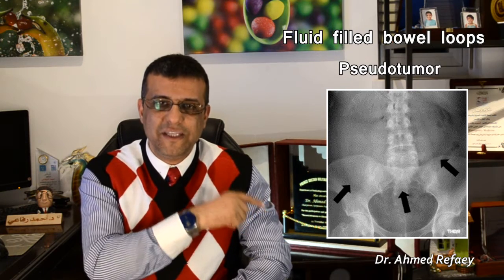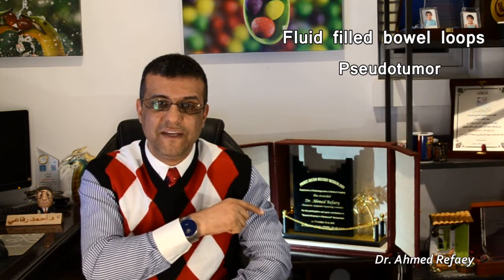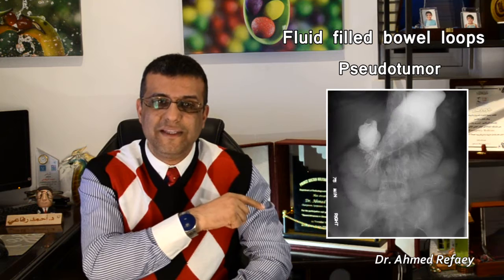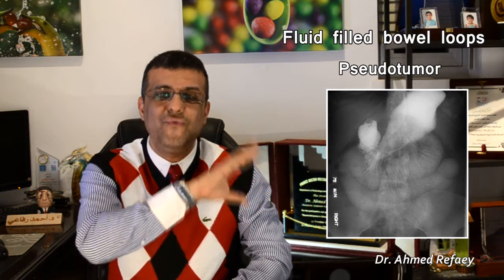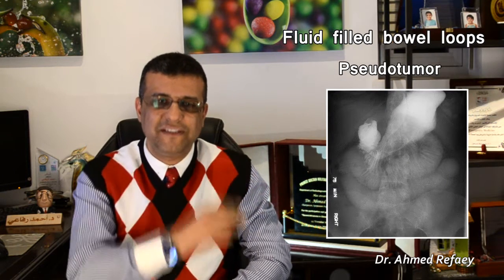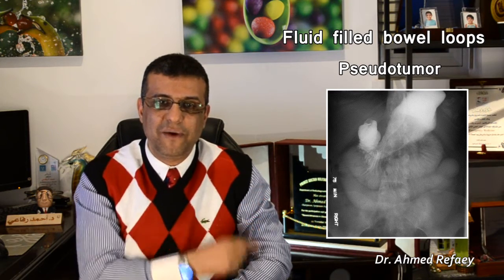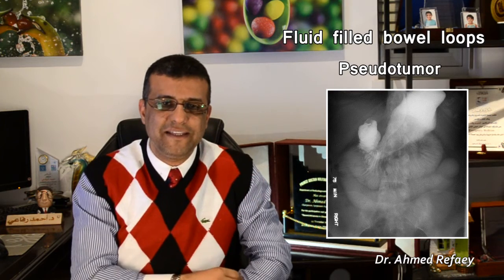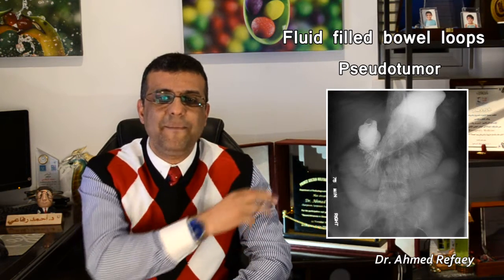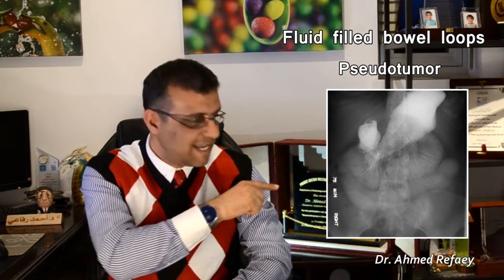The same patient underwent an upper GI series with oral gastrografin, which showed that the soft tissue mass is actually due to fluid-filled dilated small bowel, as seen in this image. There is marked dilatation of the small bowel loops, centrally located in the mid abdomen, with appreciation of the valvulae conniventes, as seen here.